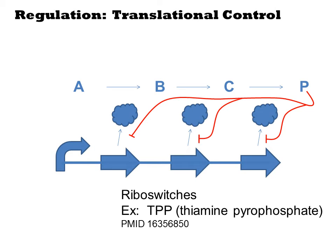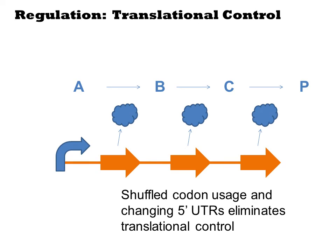Another possibility is translational control. Here, the product or intermediates can bind to the mRNAs and alter translation behavior. For example, thiamine pyrophosphate riboswitches are a common natural feature of enzymes related to that cofactor. RNA elements can similarly be eliminated by shuffling the codon usage. For example, there might be a serine codon AGT that overlaps a riboswitch, and mutating it to another serine codon like AGC could break the RNA element. Doing this for all codons in the gene is guaranteed to eliminate any native RNA structure, so any aspects of translational control can be eliminated by codon shuffling.